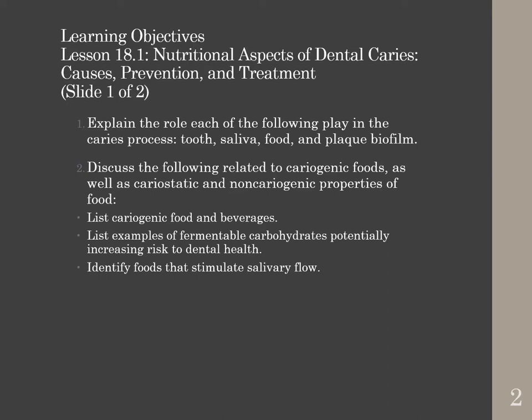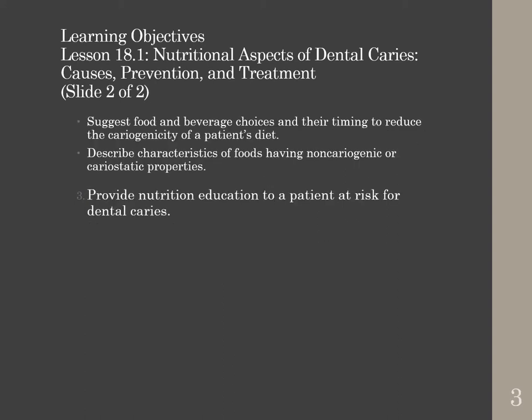The learning objectives for this chapter are to explain the role each of the following play in the caries process: the tooth, saliva, food, and plaque biofilm. We're going to discuss cariogenic foods, as well as cariostatic and non-cariogenic properties of foods. We will list cariogenic food beverages, list examples of fermentable carbohydrates potentially increasing risk to dental health, identify foods that stimulate salivary flow, suggest food and beverage choices and their timing to reduce cariogenicity, and provide nutrition education to a patient at risk for dental caries.